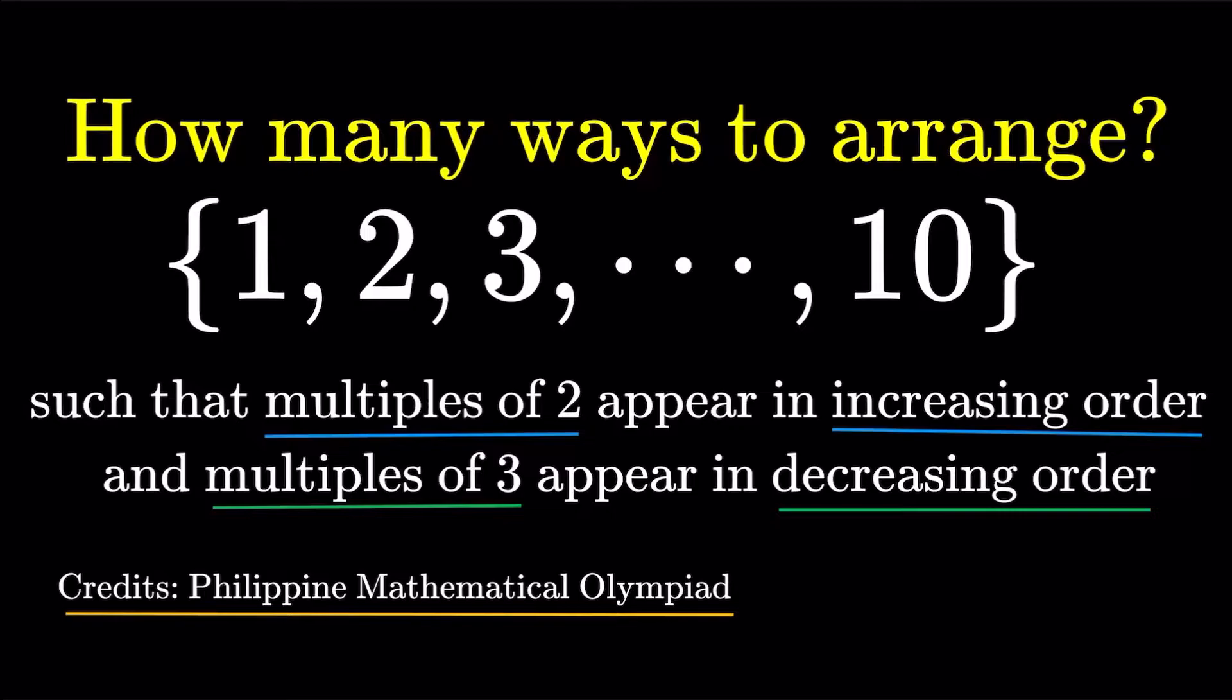As usual, pause this video if you'd like to give this item a try, but if you're done, let us dive into the solution. All right, so the question is not that difficult to understand. We just want the multiples of 2 in increasing order and multiples of 3 in decreasing order.